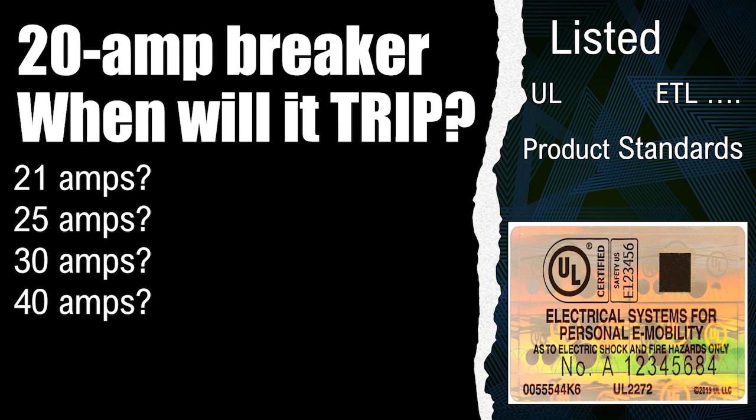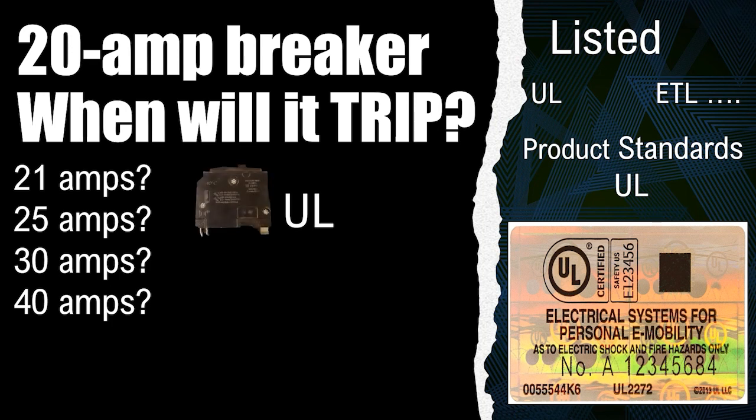Product standards are the parameters by which manufacturers manufacture these products, and those are written by UL. So how it works is, UL will take something like a molded case circuit breaker, or if a new technology comes out,